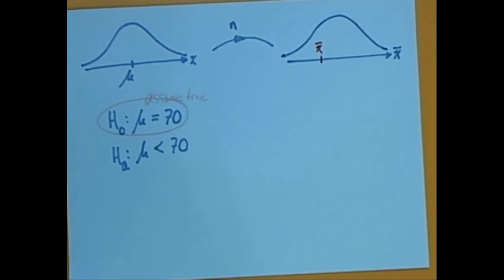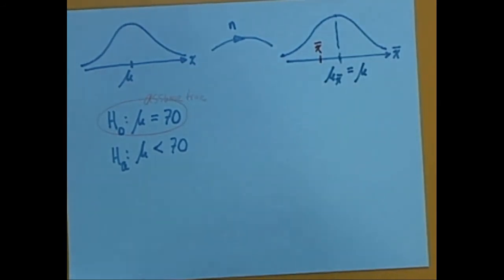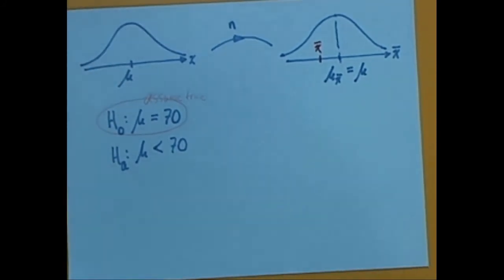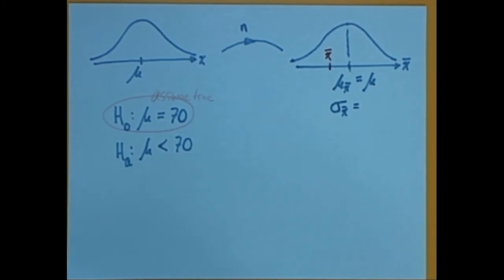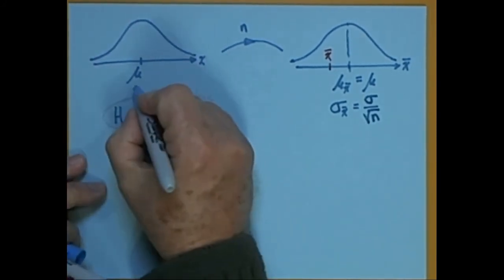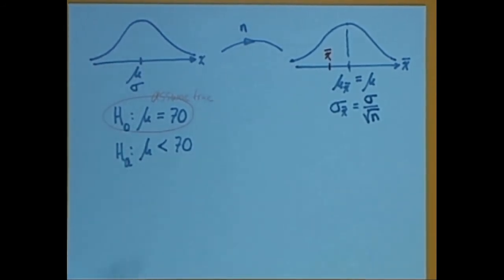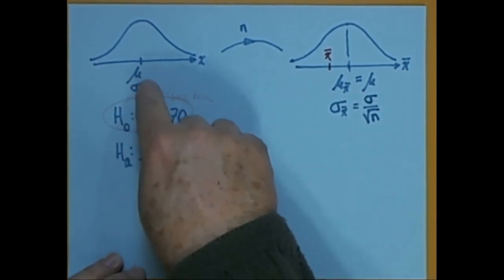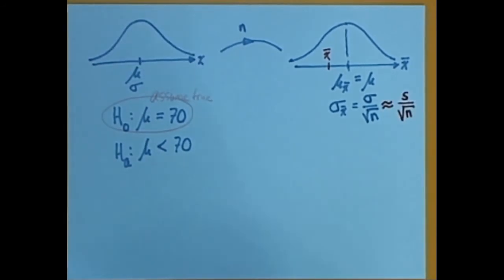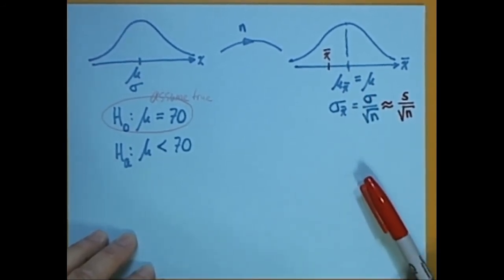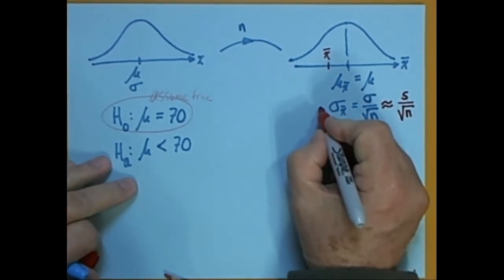The central limit theorem tells us that if we looked at every sample of size N and calculated the mean of each, the distribution of all those sample means would be normally distributed. Furthermore, the mean of all sample means equals the mean of the original population — the parameter we're trying to understand. The standard deviation of all sample means equals the population standard deviation divided by the square root of N. Since we don't know the population standard deviation, we use the sample standard deviation as an approximation. We call this the standard error.